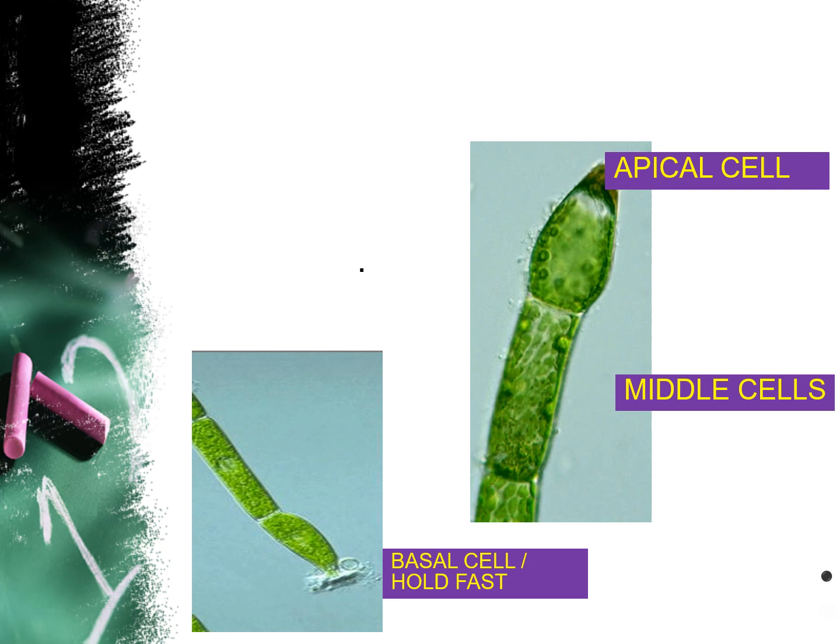The cell at the base is modified into finger-like projections and known as holdfast. It helps in the attachment of Oedogonium to the substratum.